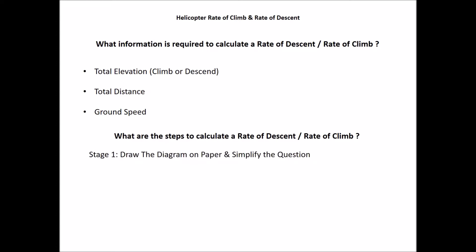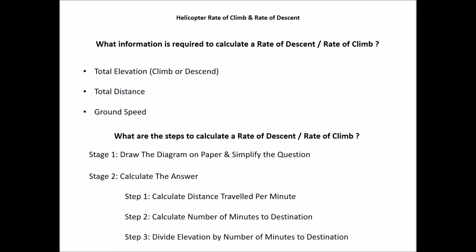First of all, draw the diagram on paper and simplify the question. I've mentored a few students and this tends to be a common area where they make mistakes — they try to do it in their heads, on the fly, in an exam situation with stress and pressure. So draw the diagram on paper and simplify the question. In stage two, calculate the answer in three steps: calculate the distance travelled per minute, calculate the number of minutes to your destination, and divide the elevation by the number of minutes to your destination.